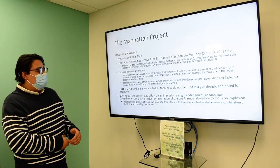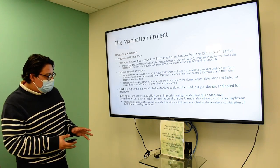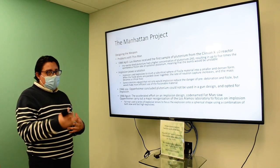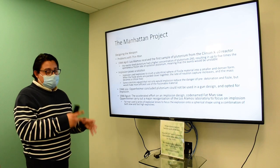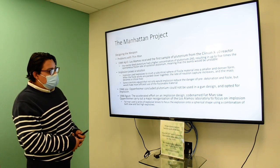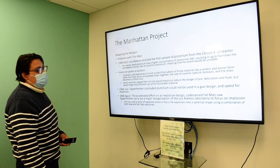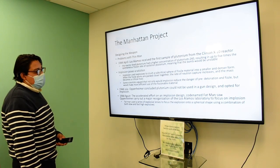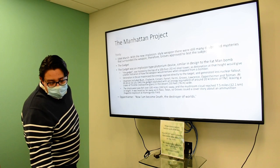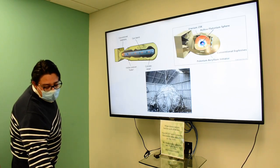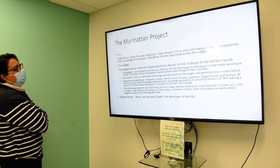In July of 1944, Oppenheimer completely scraps the plutonium gun design and opts for implosion, which uses plutonium in a different way. They're going to use implosion to design the Fat Man bomb at Los Alamos laboratory.